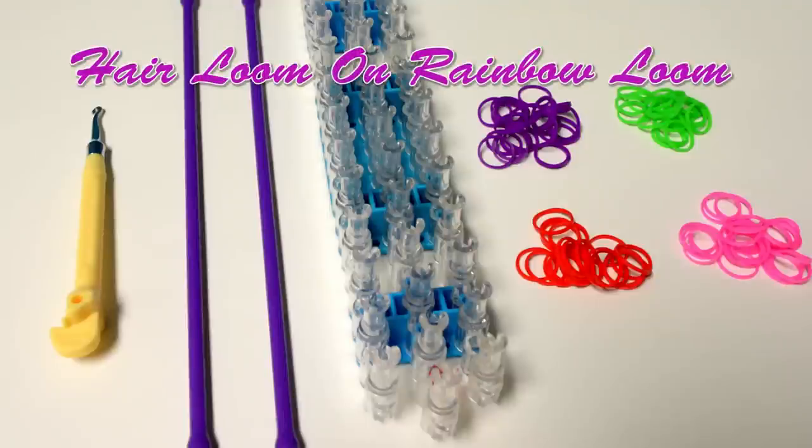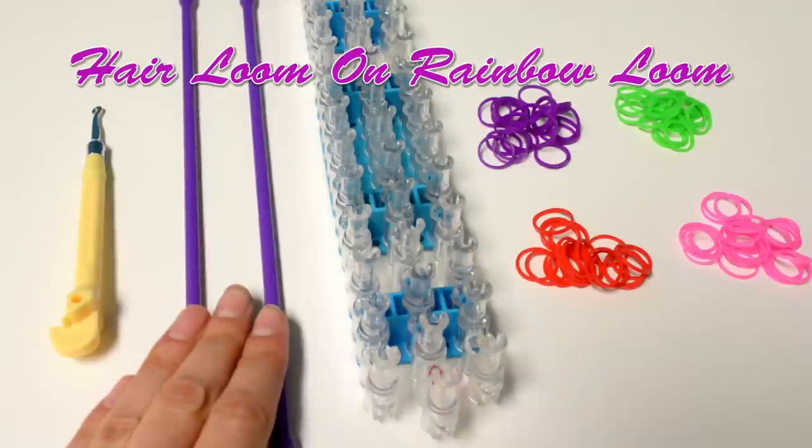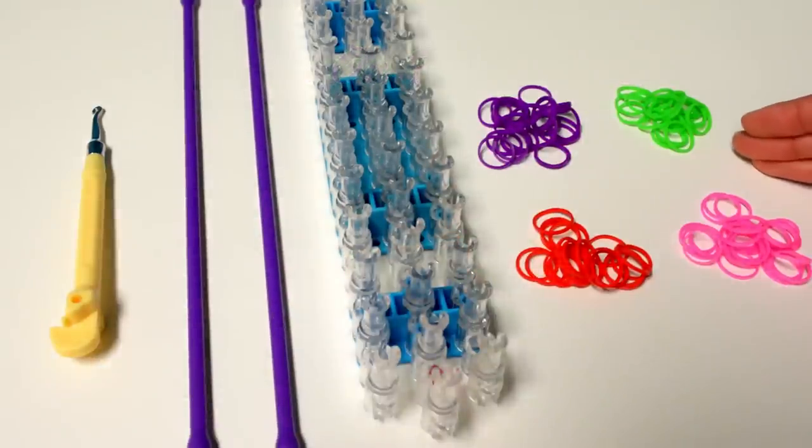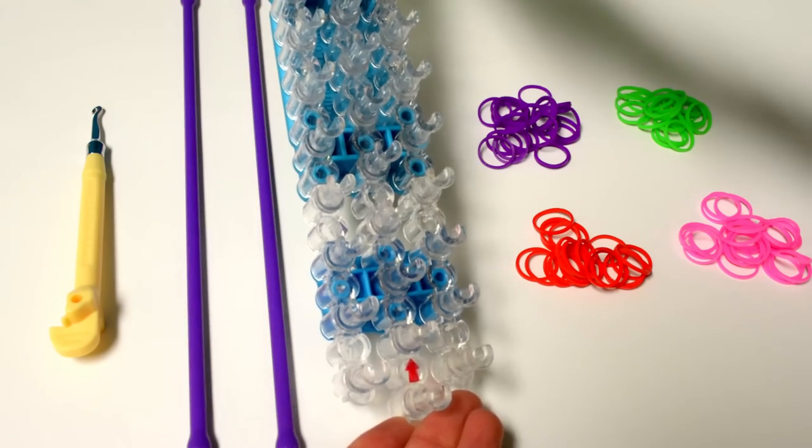Alright, let's get started. What you will need is your Rainbow Loom Hook, both of the extension bars provided in the kit, your Rainbow Loom as well as silicone bands. Now, you want to start with your Rainbow Loom pointing away from you.